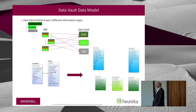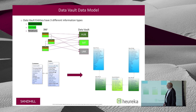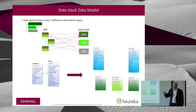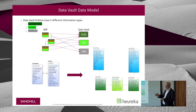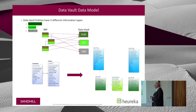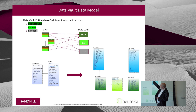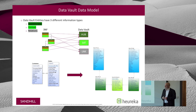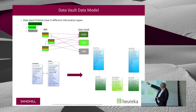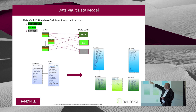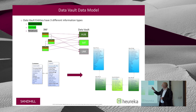The data model is significantly different from the normal third normal form model. The information contained in your tables is divided into three types: business keys, context, and relations. The business key columns are used to populate something called the hub. The context columns will form one or more satellites, and then the relationship information gets used to form a third table called the link table.